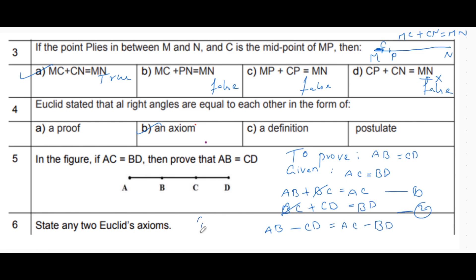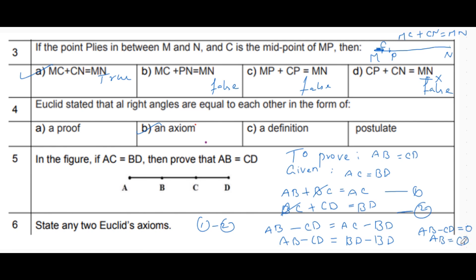On subtracting equations one and two, AB minus CD equals AC minus BD. Since it is given that AC equals BD, substitute BD for AC: BD minus BD equals zero. So AB minus CD equals zero, which gives AB equals CD. Hence it is proved.